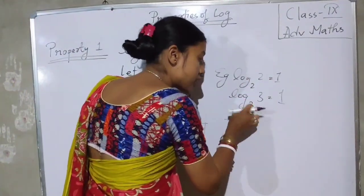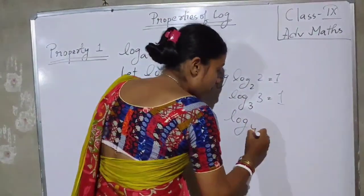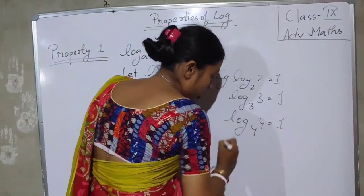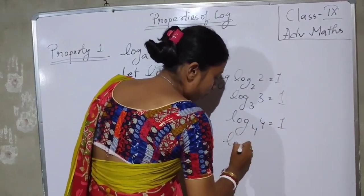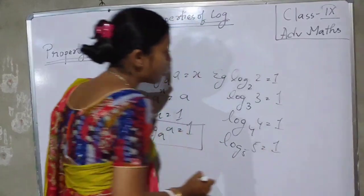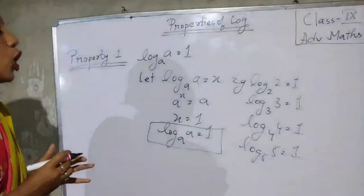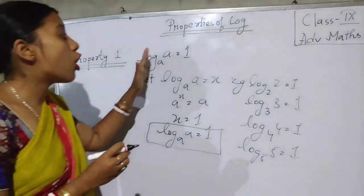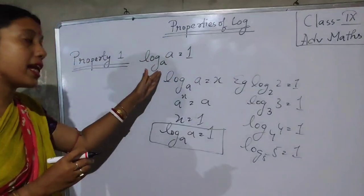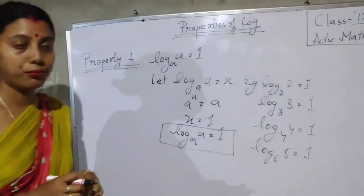Log of any number on the same base will be 1. Log 5 base 5 equal to 1. So, what is property 1? Log of any number on the same base will be equal to 1.